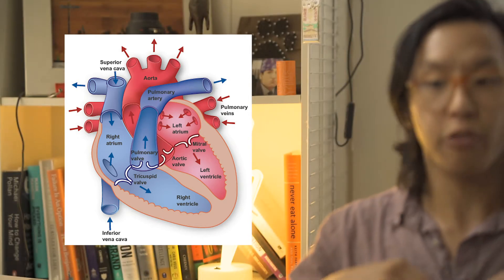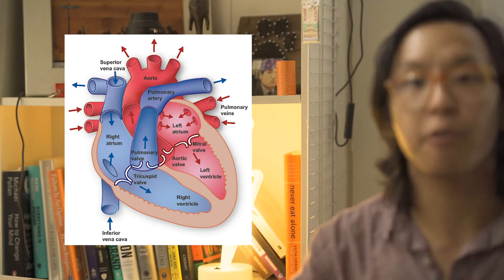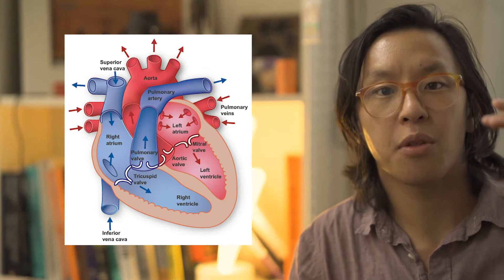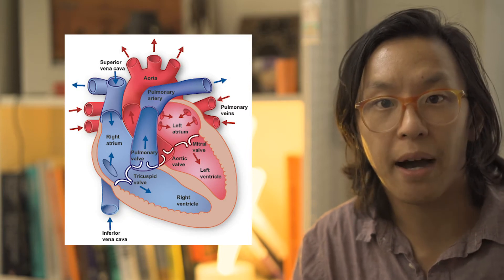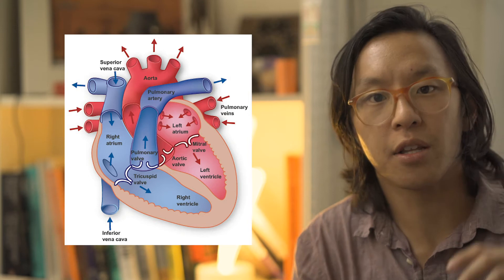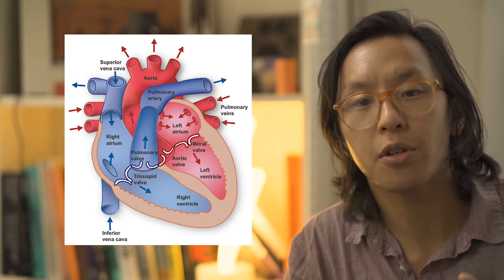Right off the bat, if you want to separate the top half from the lower half, I think of alphabetically it starts with A at the top and then goes down to V at the bottom. So the atria are at the top, the upper chambers, and then the ventricles are the lower chambers.